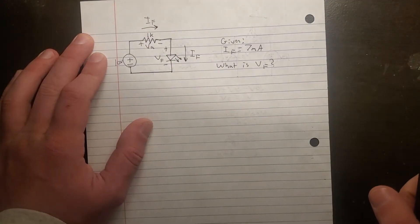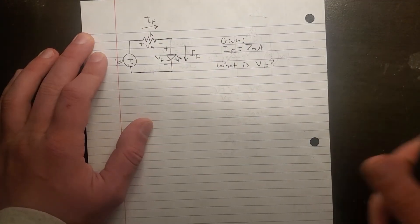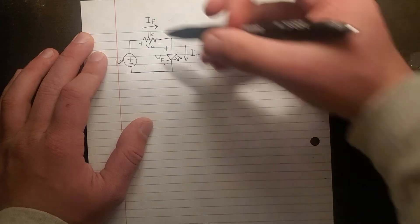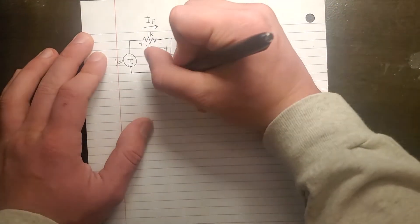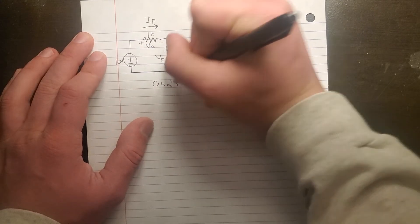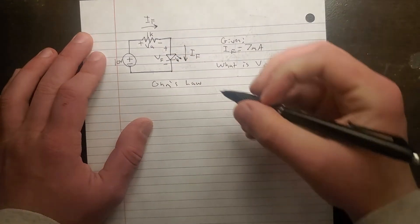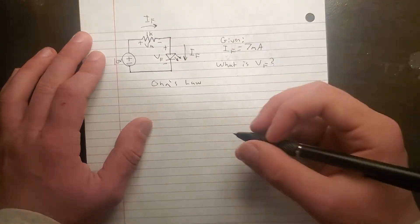Now, this one's pretty straightforward. Well, we have the given IF. So now we can find the VA very quickly through Ohm's Law again. So 7 mA, 1K.